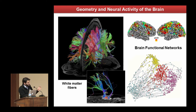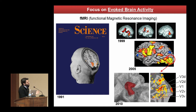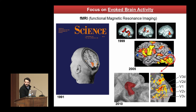These two approaches are clearly complementary and we should study both, but what I'm going to talk about is more on the functional side. When we talk about this, we can start from the very first evidence of functional imaging in humans — the first paper published in Science in 1991 about the first functional activation in the human occipital cortex while a subject was seeing flickering lights on a screen.